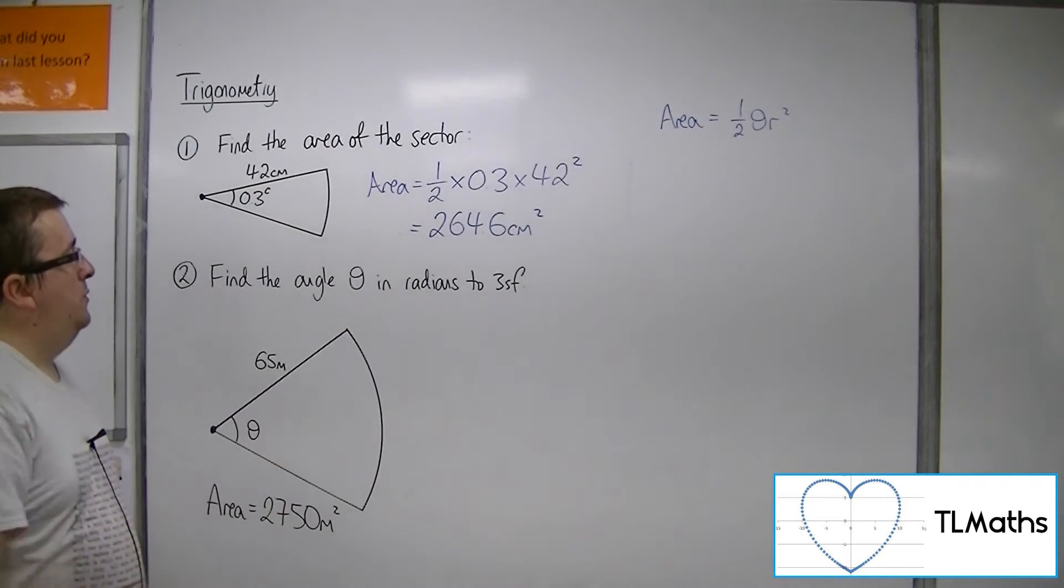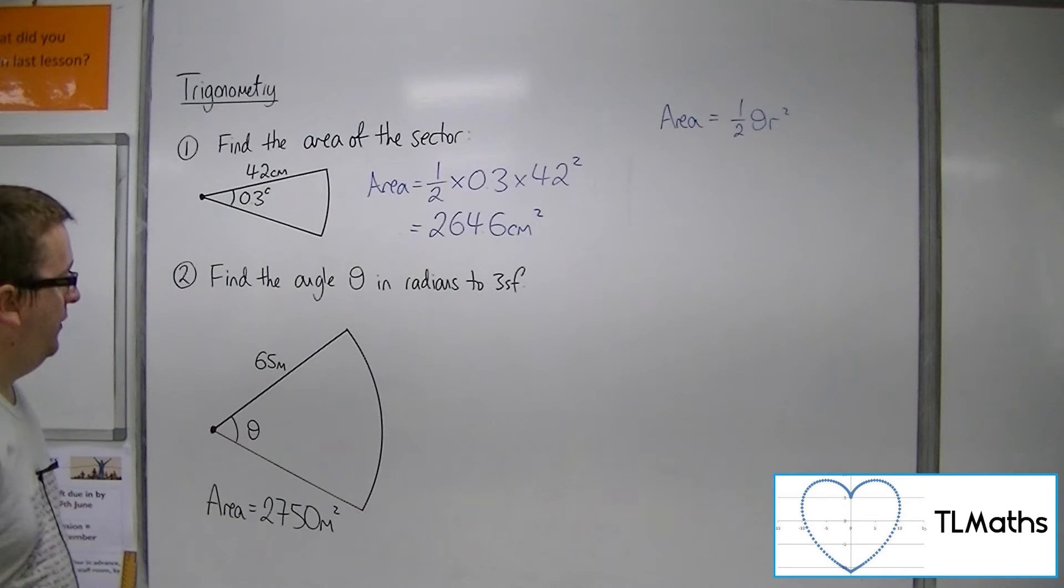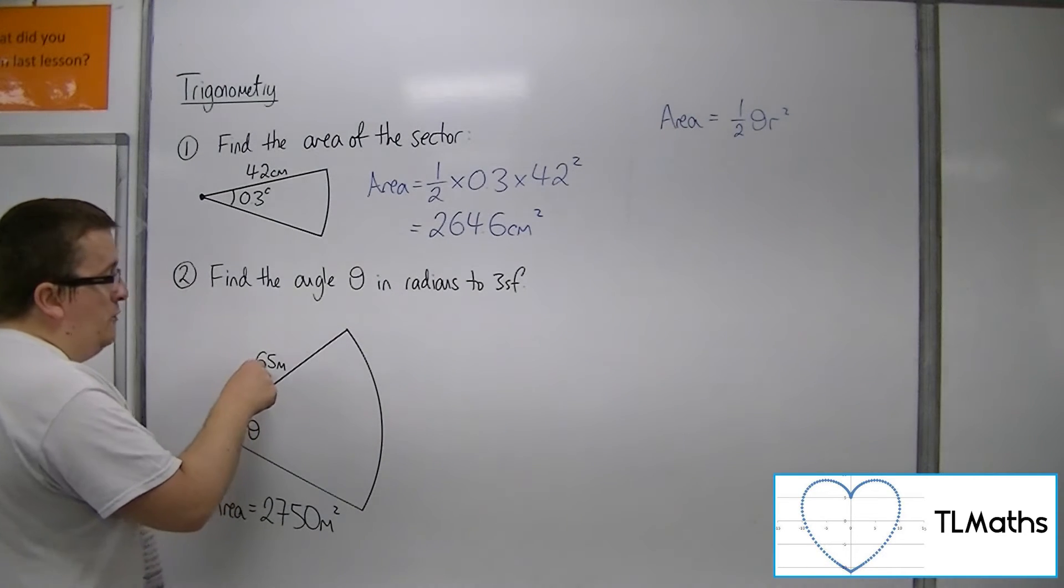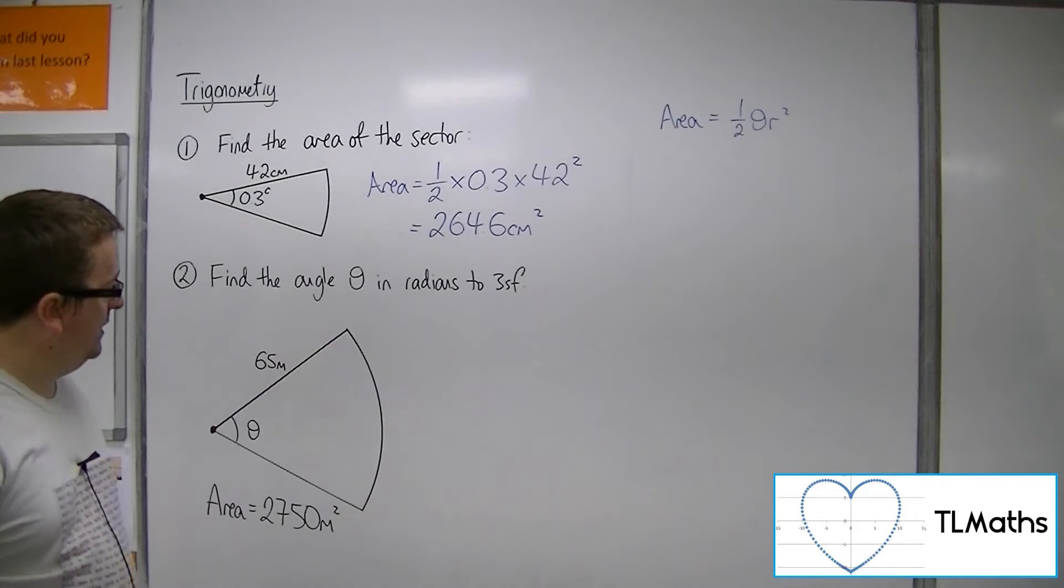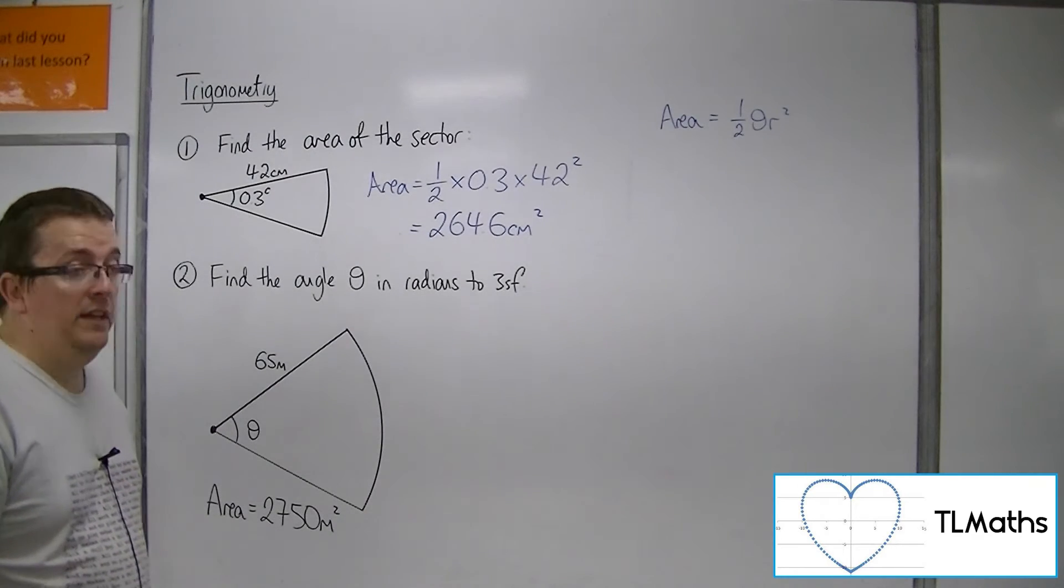Then for number 2, find the angle theta in radians to 3 sig fig. I don't know the angle, I know the radius r is 65, and I know that the area of the sector is 2750 square meters.